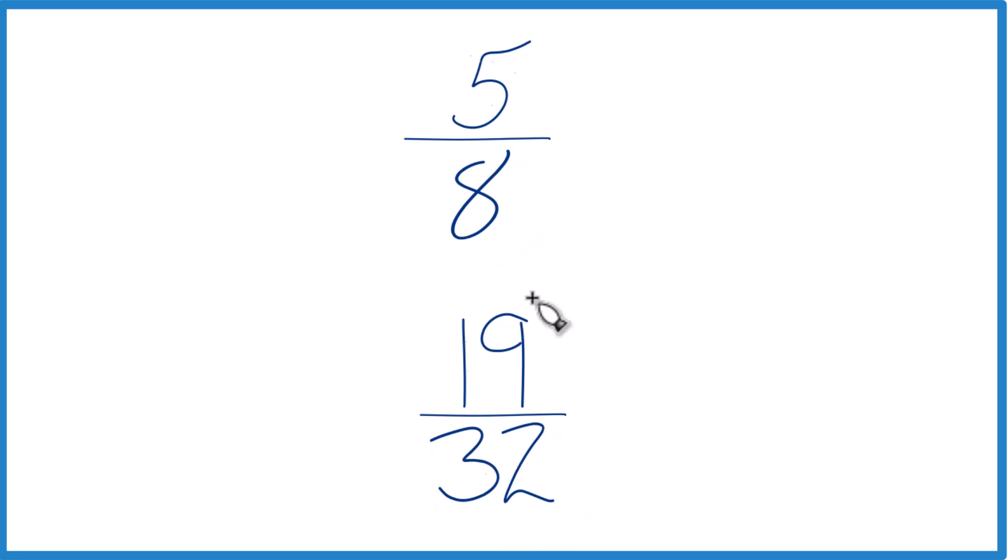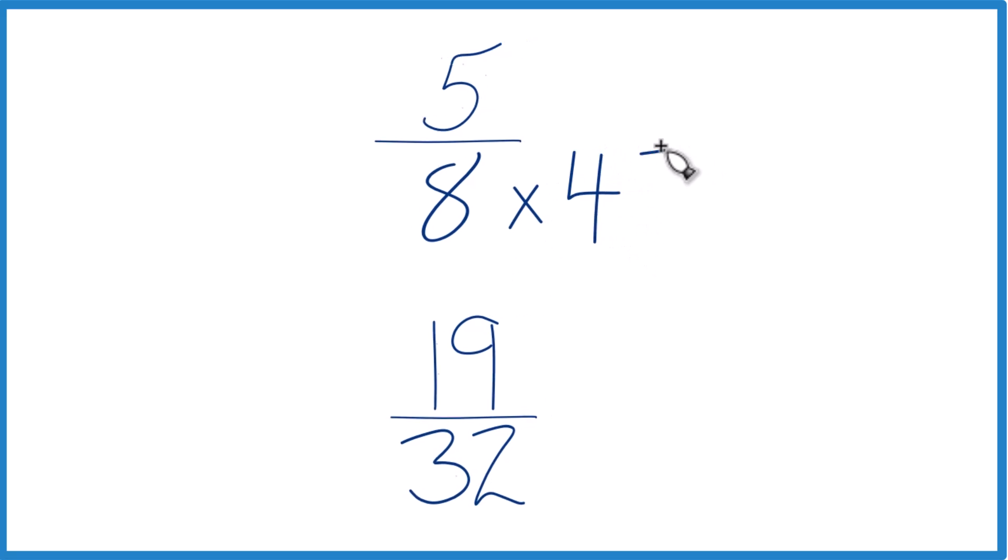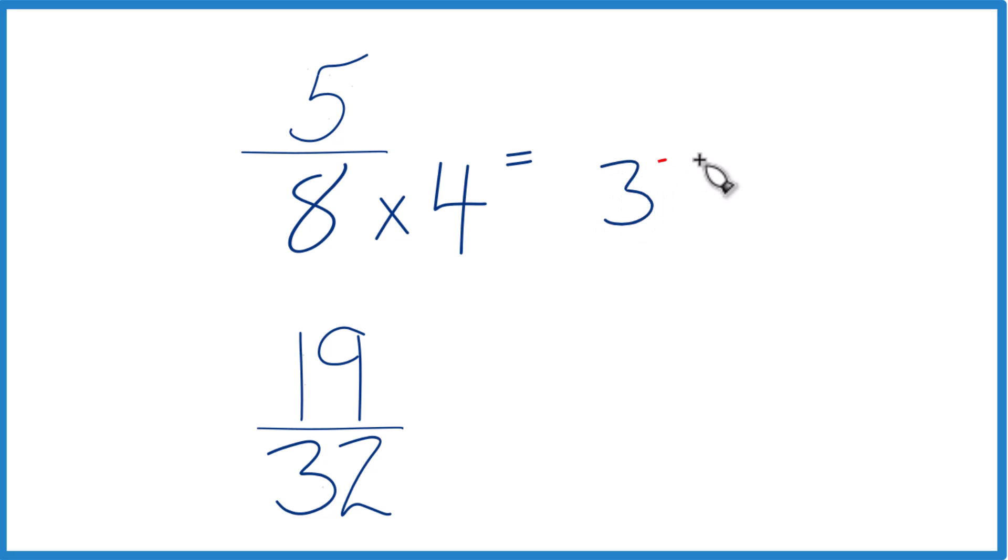So let's do that. 8 times 4 is 32, so I'm just going to say 8 times 4 here, and that will give me 32. Down here, we already have 32, so let's just keep it the same, 19 32nds like that.